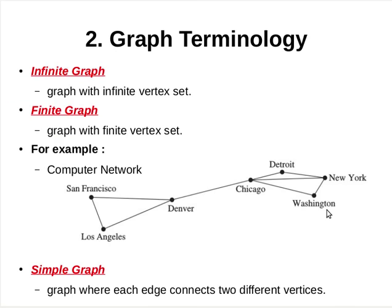Now we shall discuss the terminologies used in graph theory. An infinite graph is a graph with an infinite vertex set, whereas a graph with a finite number of vertices is called a finite graph.